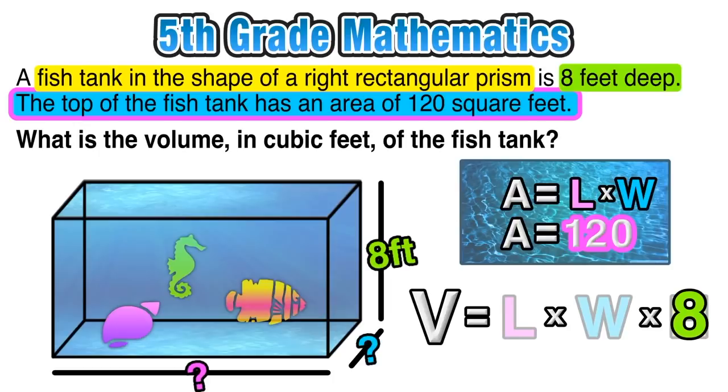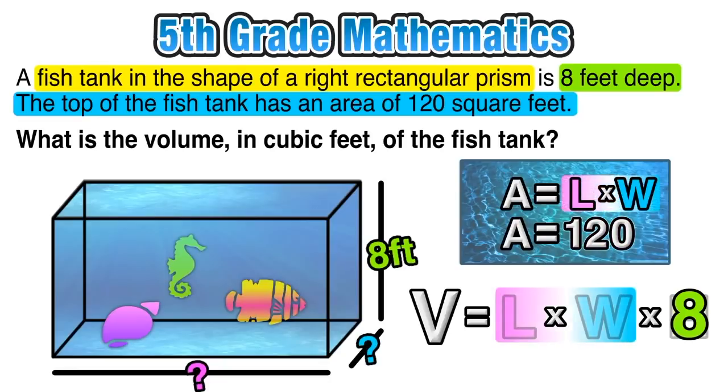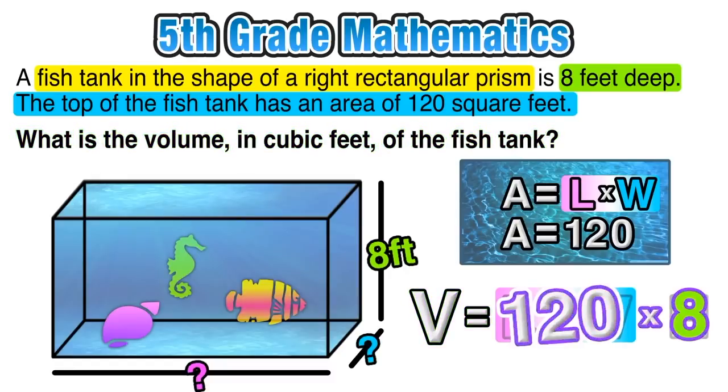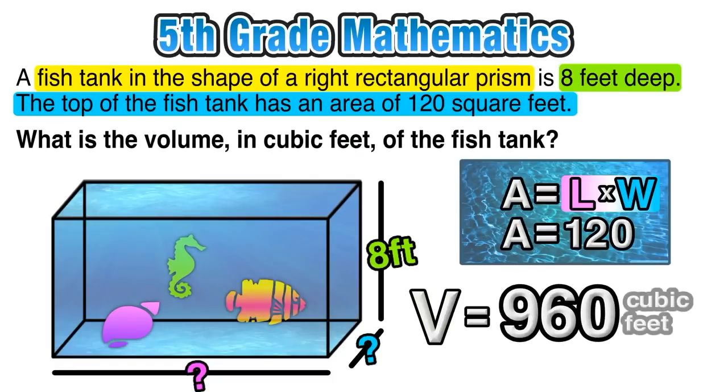So even though we don't know the exact measurements of the length and width of the fish tank, we know that their product is going to be 120. Remember that in the volume formula we didn't know what L times W equal? Well now we do. We know that length times width for this rectangular prism is 120, so I can slide that right into the volume formula. So now I can say that the volume is equal to 120 times 8, and the product of 120 and 8 is 960, the number of cubic feet that makes up the volume of the fish tank.